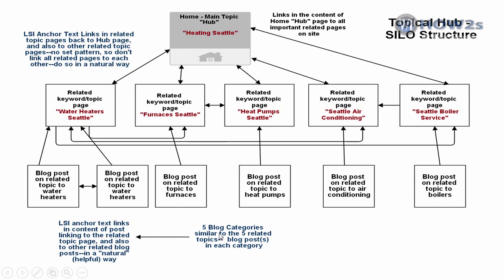We're also going to have five blog categories, which are very similar to our related topics. In each blog category we'll have one initial blog post, and you can obviously have more than one blog post per category down the road. In the content of our home hub page we're going to have links to all these important related pages, and in the related topic pages we'll have links back to our home page and naturally to some of the other related topic pages.